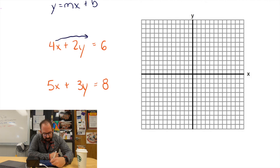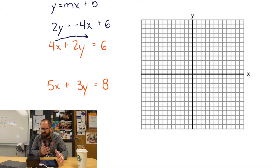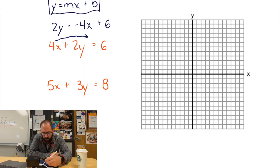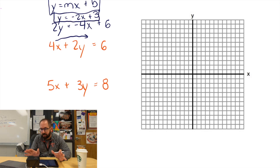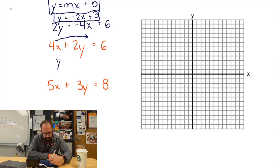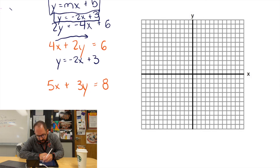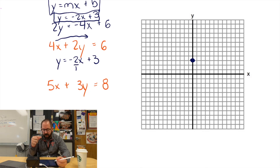I move the 4x across so it becomes negative 4x, leaving 2y equals negative 4x plus 6. Then I divide everything by 2 to get y by itself. That gives me y equals negative 2x plus 3. So I start at positive 3 on the y-axis, and my slope is negative 2 over 1 — drop 2, run 1 to the right. Drop 2, run 1, drop 2, run 1. I like to draw a few dots so you can see where the line is heading.